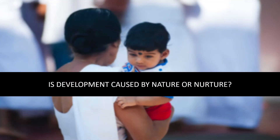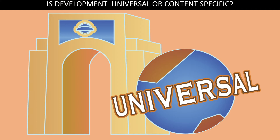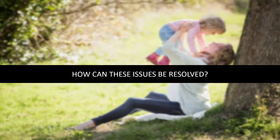Developmental psychologists try to answer human growth based on three fundamental issues, and adding one more dimension, we can state that there are four fundamental issues. The first issue is: Is development caused by nature or nurture? Second: Is development more continuous and smooth, or discontinuous and stage-like? Third: Is development universal or context-specific? Fourth: Is an individual an active or passive participant in their development? Let us discuss how this issue has been debated and how it can be resolved.